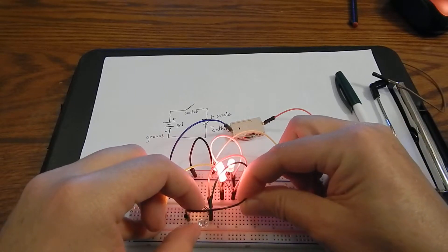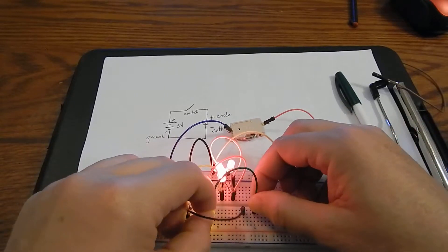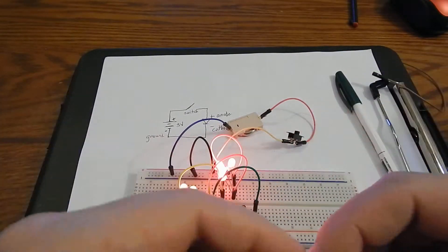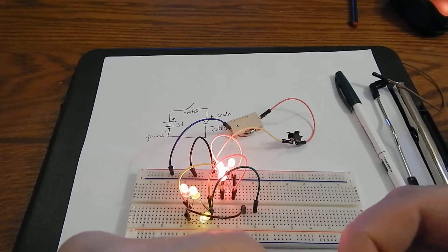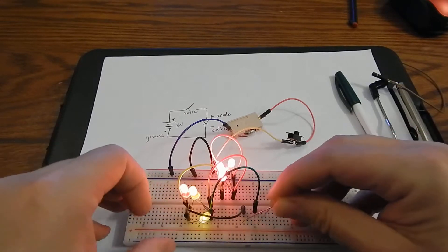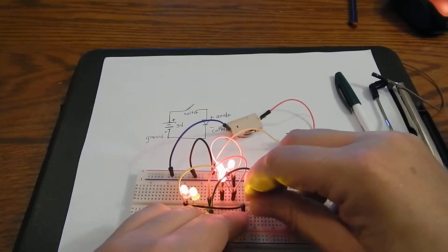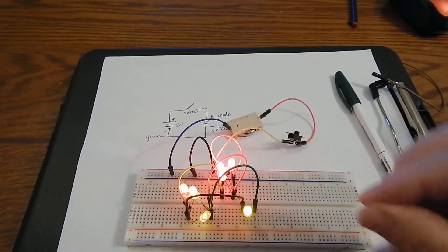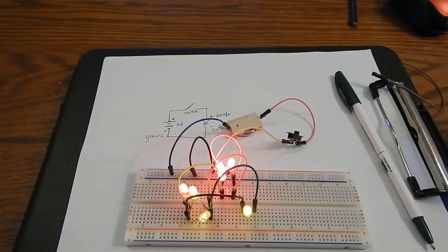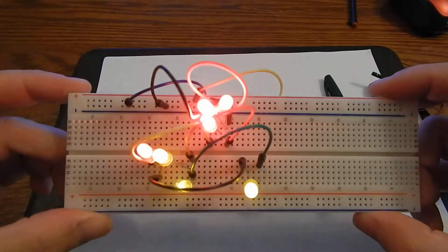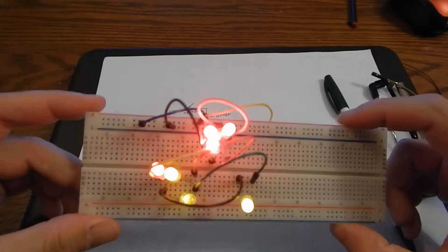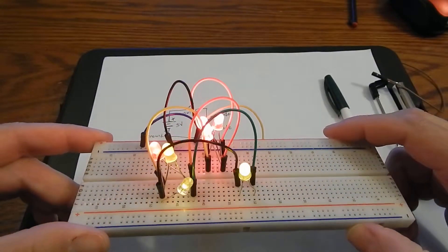And as long as I'm keeping up the same relationship of where the long one is and where the short one is, the positive and negative, as long as I keep those in line we could keep doing this all over the place. However, at some point we might be asking too much out of the battery. But you can see I've just connected seven LEDs to the same circuit simply with jumper cables.